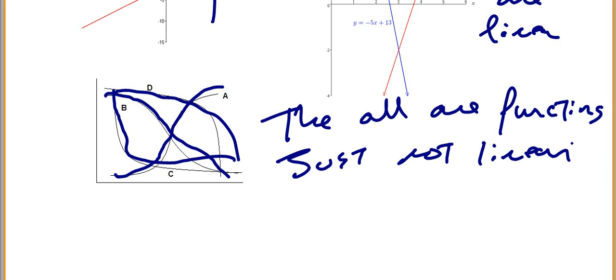So just remember, identifying linear functions by their graph is just going to be a straight line. Each domain value is going to be paired exactly with one range. So for each x, there is only one y. And vertical lines aren't functions. They are just kind of distractors.